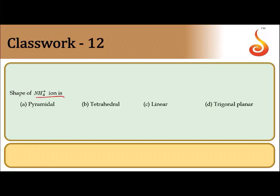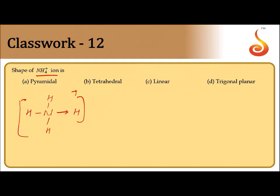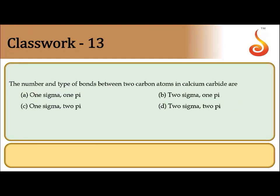The shape of the ammonium ion depends on hybridization and the number of lone pairs and bond pairs. Ammonia (NH₃) forms a coordinate covalent bond with hydrogen to give NH₄⁺. The ammonium ion has four bond pairs and zero lone pairs, so there is no distortion. Four bond pairs gives a tetrahedral structure. The answer is option B.